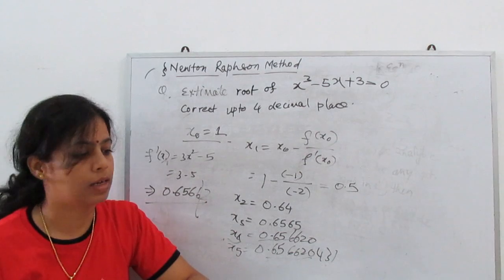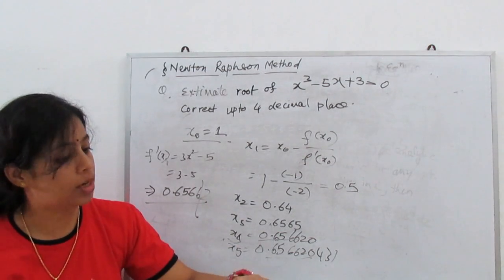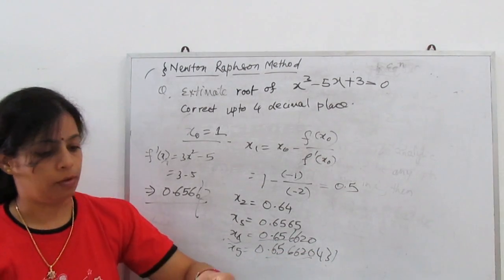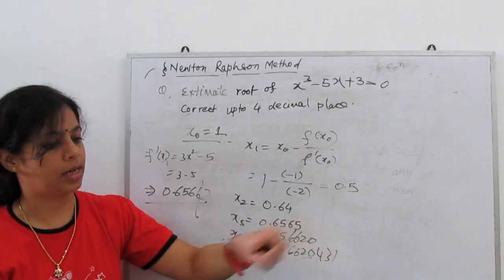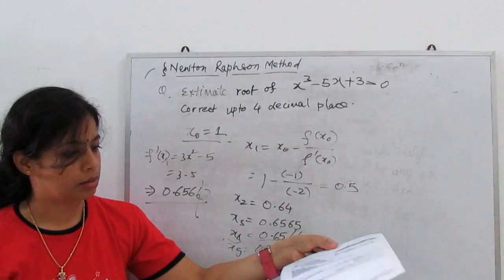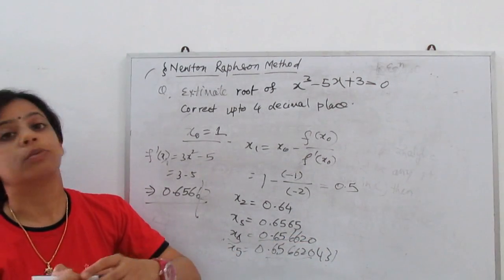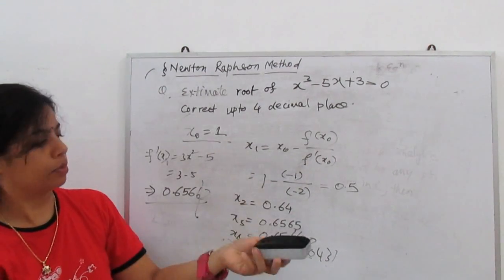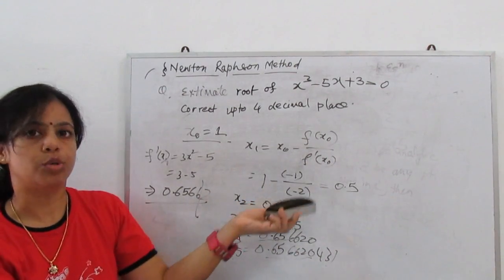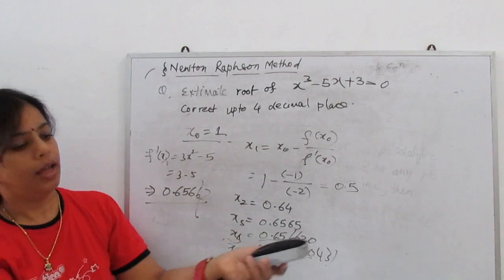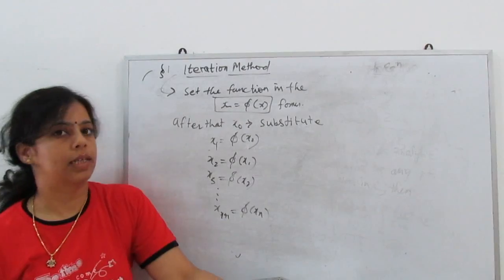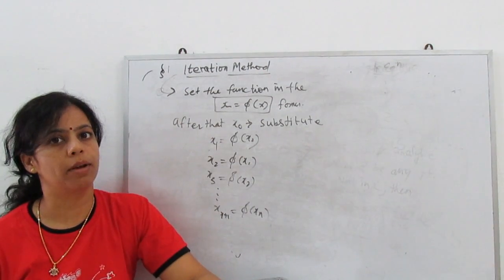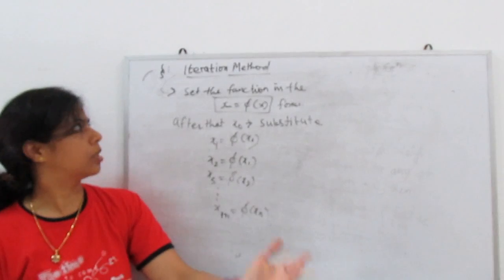This is the very simple method called the Newton-Raphson method. Now we can go further. Another method is called the iteration method. Iteration means we have to repeatedly substitute: from one value to the second, second to the third — that is iteration. In the iteration method, we have to repeat the process.